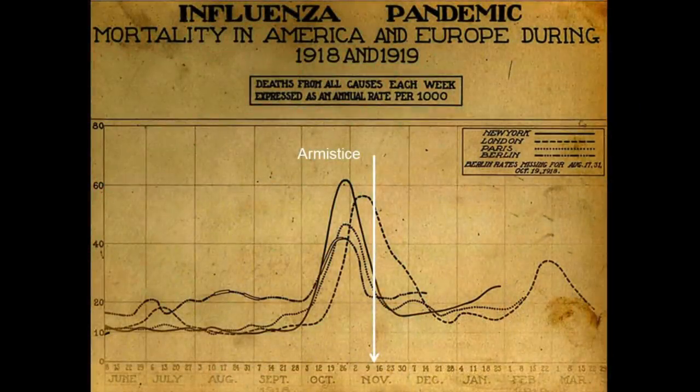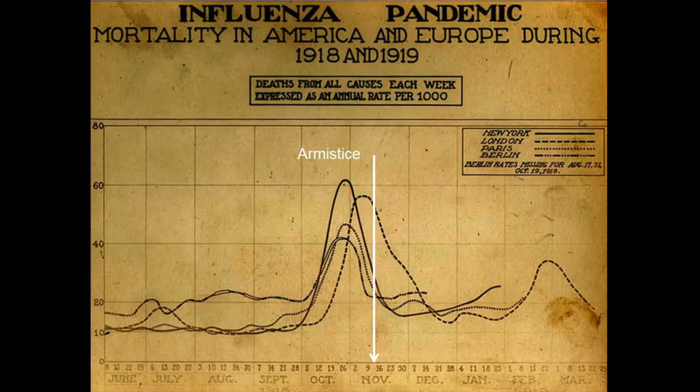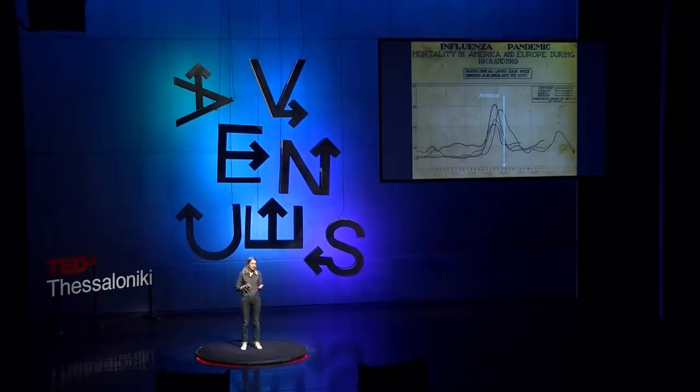Not only was there this major influenza pandemic in 1918, but it was also the tail end of the First World War. I've marked here the armistice — the official end of the First World War — in white. This really shows that infectious diseases are a priority, and we need to collect these kind of data to understand how and why these epidemics happen. Computational and mathematical tools can be used on data like these to understand the transmission processes, with the ultimate aim of developing interventions and control methods to curtail the epidemic.